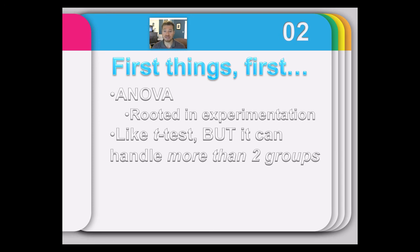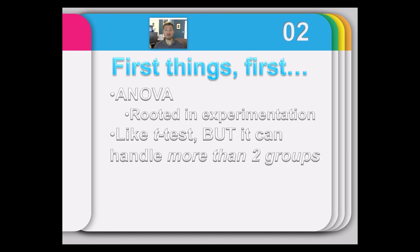If you remember the independent sample t-test, we could grab people with depression, randomly assign them to a placebo control and an intervention treatment, and compare average depression between groups to infer whether the difference was the result of treatment. But we can only handle two groups there. What if you wanted three groups, four groups, five groups? ANOVA can handle essentially as many groups as you would like, which is a nice advantage beyond the t-test.